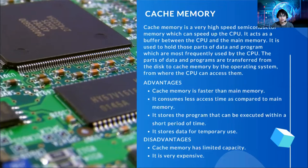What are the advantages and disadvantages of cache memory? Advantages: cache memory is faster than the main memory. It consumes less access time as compared to the main memory. It stores programs that can be executed within a short period of time and it stores data for temporary use. Disadvantages: it has a limited capacity and it is very expensive.